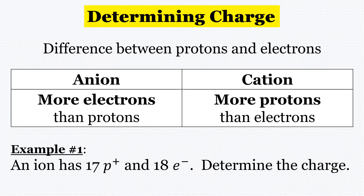So how do we determine the charge? We're essentially just going to look at the difference between the protons and electrons. An anion is negative because it has more electrons than protons. A cation is positive because it has more protons than electrons.